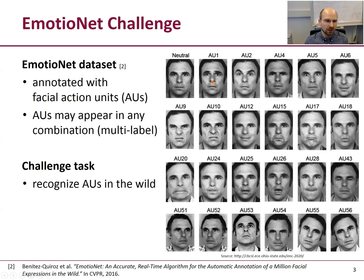Action units, for example, are rising of the eyebrows, which are Action Unit 1 or 2, and parting of the lips is Action Unit 25. The challenge task was to recognize action units in the wild, so binary classification on that data we have seen before in the slide.